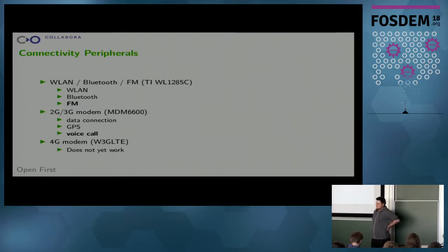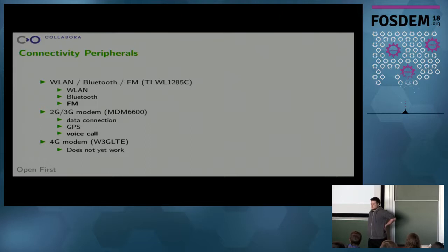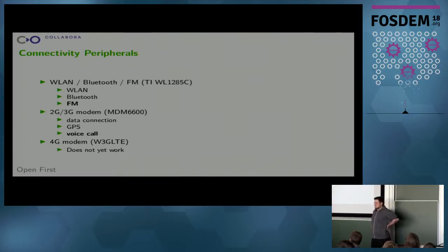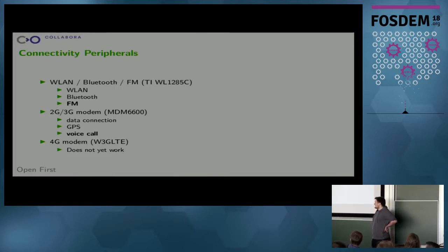The phone actually has two different modems — one for second and third generation, and one for fourth generation networks. Unfortunately the fourth generation network is only supported in the US, because the modem is limited to those frequencies, and that one is currently not working. I didn't have a look at it because I'm based in Europe. But the second and third generation is working pretty well, and Tony Lindgren is based in the US so he's currently working on the fourth generation modem. We know the main problem is that it tries to access the SIM card from the other modem using some weird protocol that is currently not supported. For the normal modem, we have GPS working, data connections, and we can send short messages. We can't do voice calls yet because audio is missing.